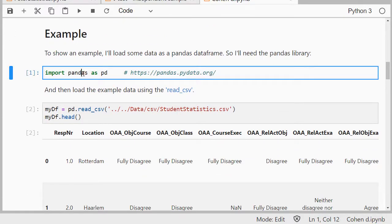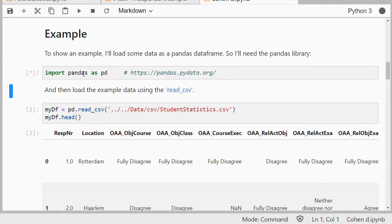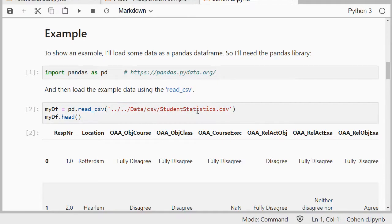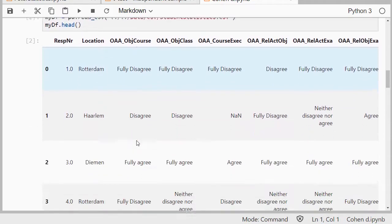I'll be using pandas. If you've never used pandas before, run first pip install pandas. And then I can use my read CSV to actually load this student statistic CSV file, and with the head I'm showing the first five records.